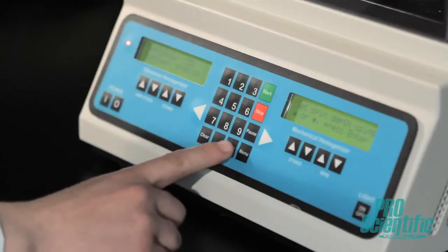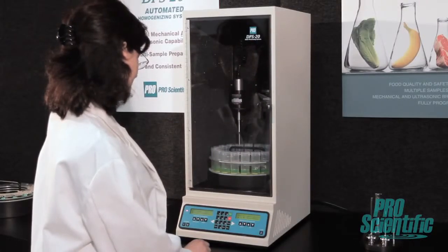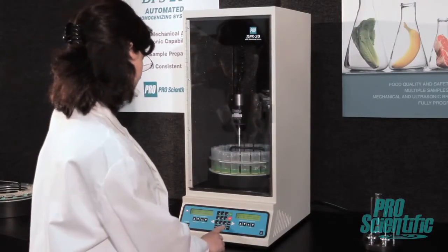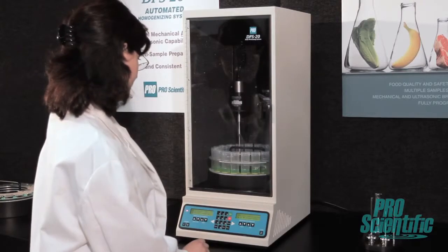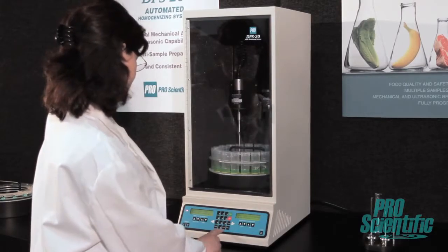Regardless of which mode you're using, programming of the DPS20 is simple. Programming is completely menu-driven using a keypad and two LCDs. Once you know your desired speed and time, programs can be easily stored so there's zero operator variability. The DPS20 can also be used in manual mode for quick runs. You simply set your parameters and go. During processing, the dual backlit display clearly shows your parameters along with the estimated total processing time.